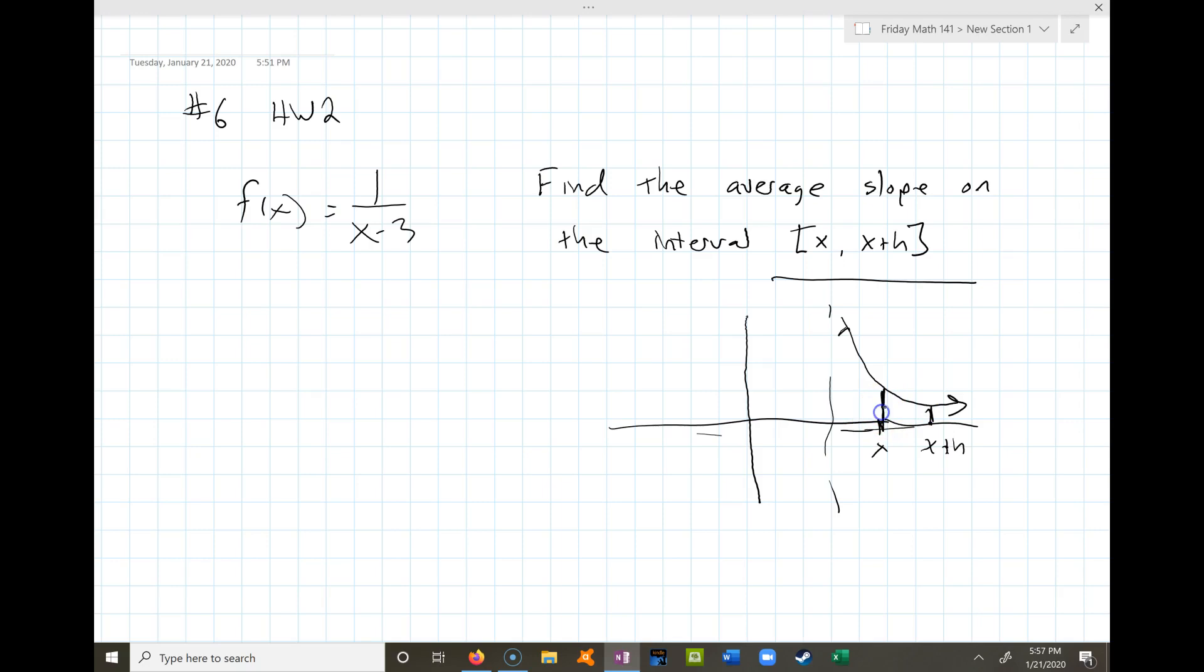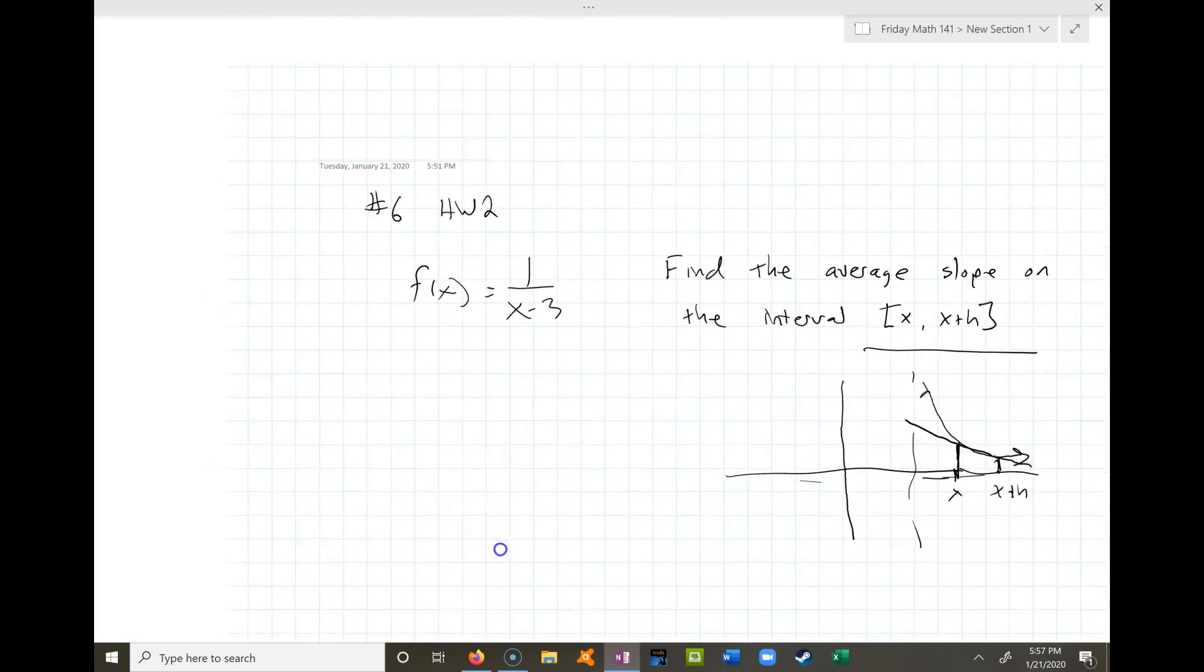So you're finding the average slope on that interval. Of course, it's not the actual slope of the graph. It would be a line going through those two points. So we're trying to find the slope of that line because that would represent the average slope on that interval. Notice it's not the exact slope of the curve because it's changing at every point. We left it as x and x plus h to leave it generic so it could be any point.